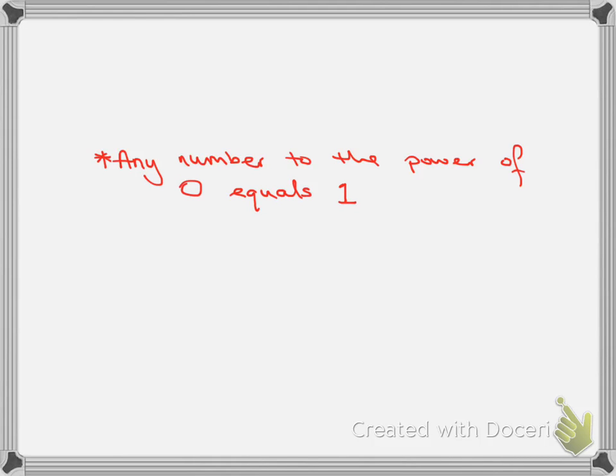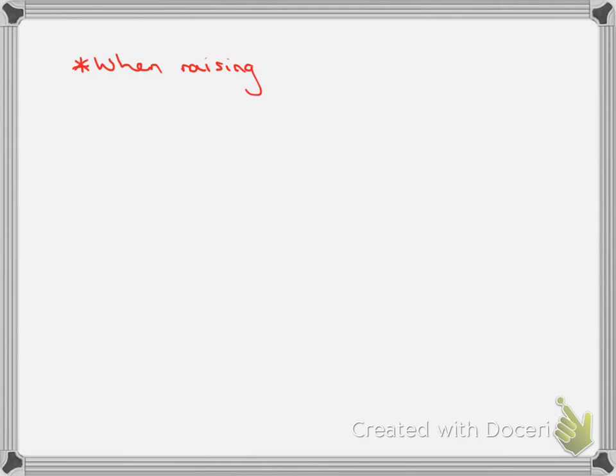Next up: any number to the power of 0 equals 1. This is a very simple one — any number to the power of 0 equals 1. The best example: a to the power of 0 gives us straight out 1. It's probably the easiest one to remember.